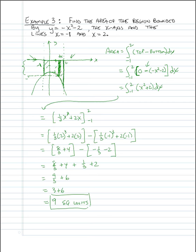The point here is that our method of finding area between two curves — top boundary minus bottom boundary — gives us the height of the representative rectangle and handles the sign automatically, regardless of whether the region is above or below the x-axis.